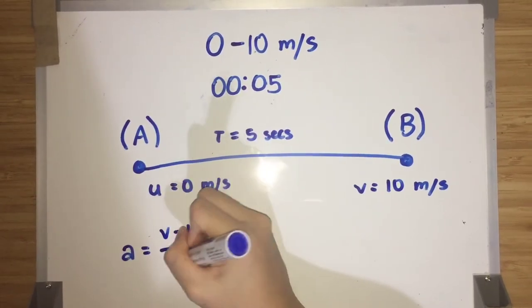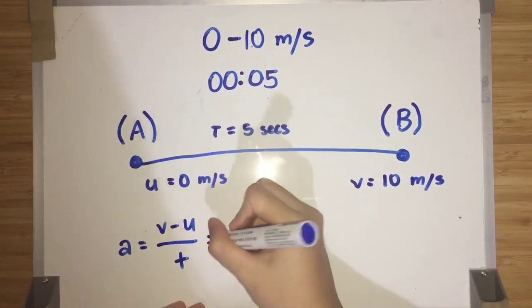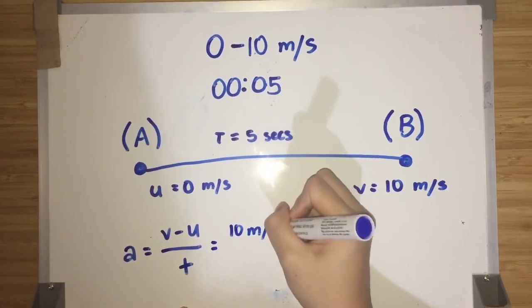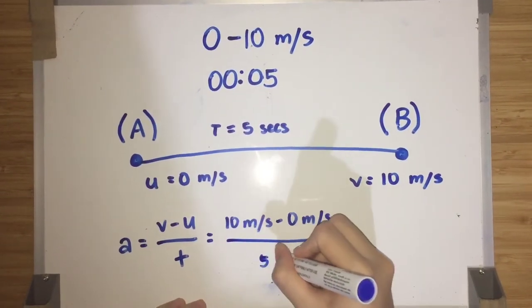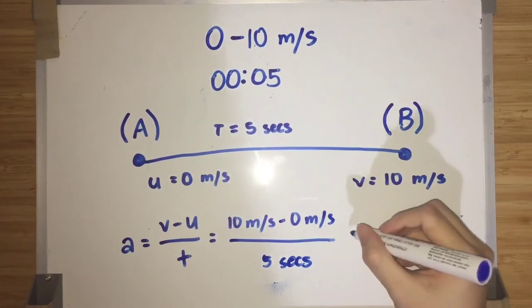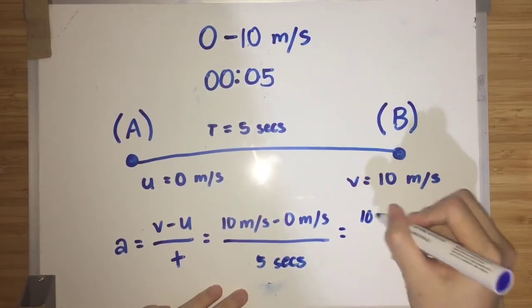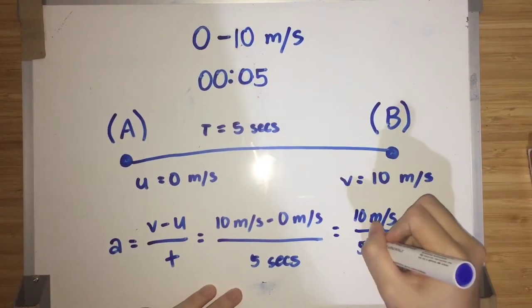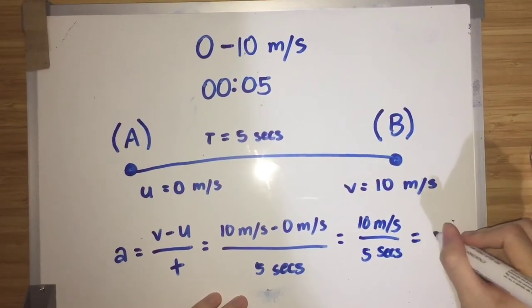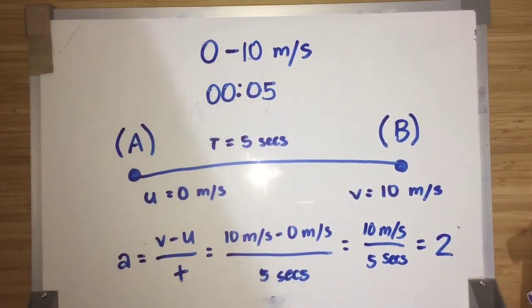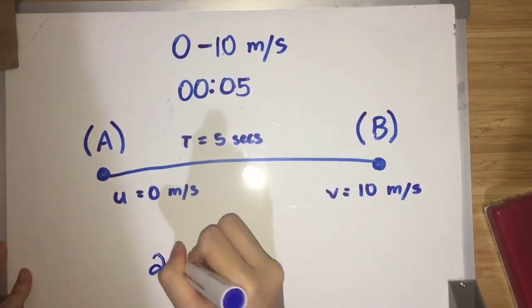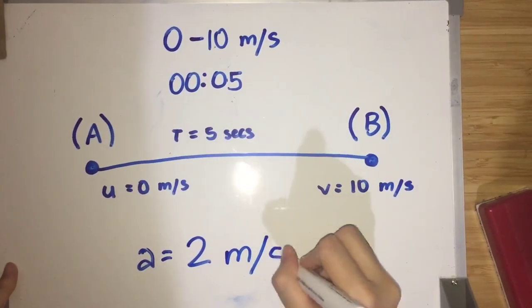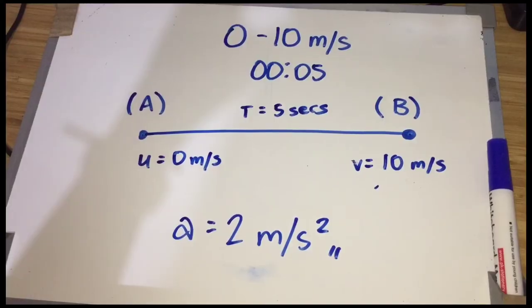Now we will plug these numbers into the formula a equals v minus u over t. We get 10 meters per second minus 0 meters per second over 5 seconds. This equals 10 meters per second divided by 5 seconds. So our final answer is 2 meters per second squared.